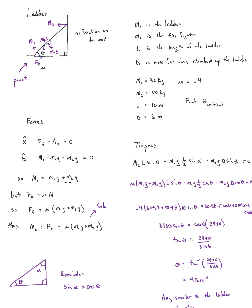Now we have the firefighter and ladder question. M1 is the mass of the ladder, M2 is the mass of the firefighter, L is the length of the ladder, and D is how far the firefighter has climbed up the ladder. We want to find the critical angle — how small can the angle get before the whole system crashes, meaning the ladder starts to slip on the ground.